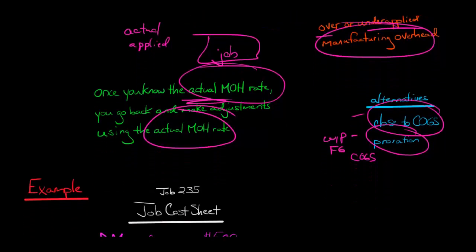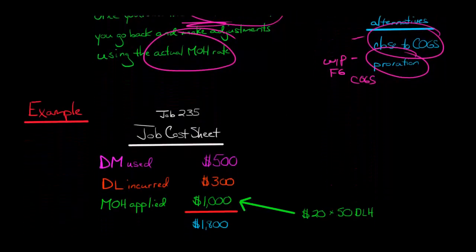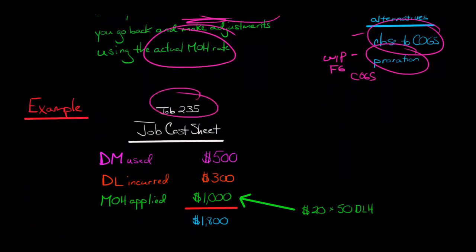Let me show you an example of how this works. We've got job 235, still in process. We've got direct materials used of $500, direct labor incurred of $300, and then we've applied $1,000 of manufacturing overhead.